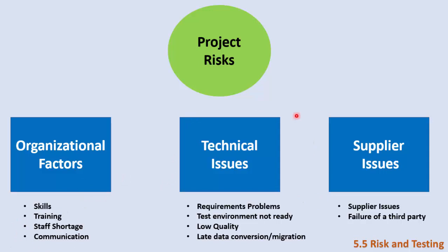The second category of project risks is technical issues — these are technical issues in the project that may delay it or reduce its capability of delivering its objectives. Examples include problems in requirements, the test environment not being ready, low quality, or data conversion and migration being delayed. If the test environment is not ready, the product won't have failures per se, but it will be delayed in its release, which is a project risk.